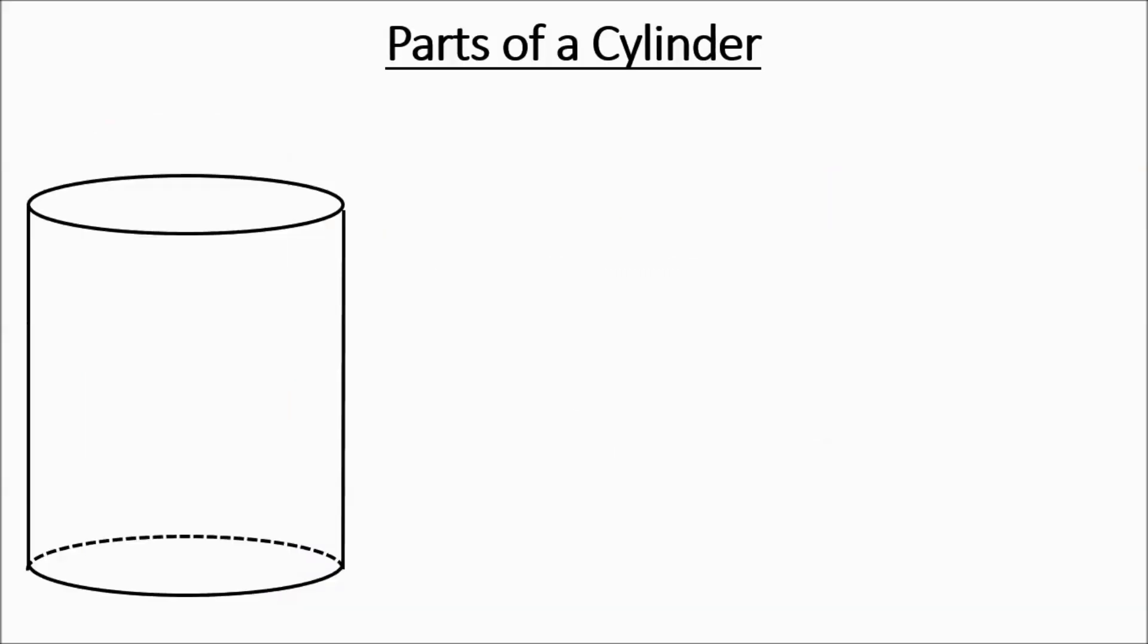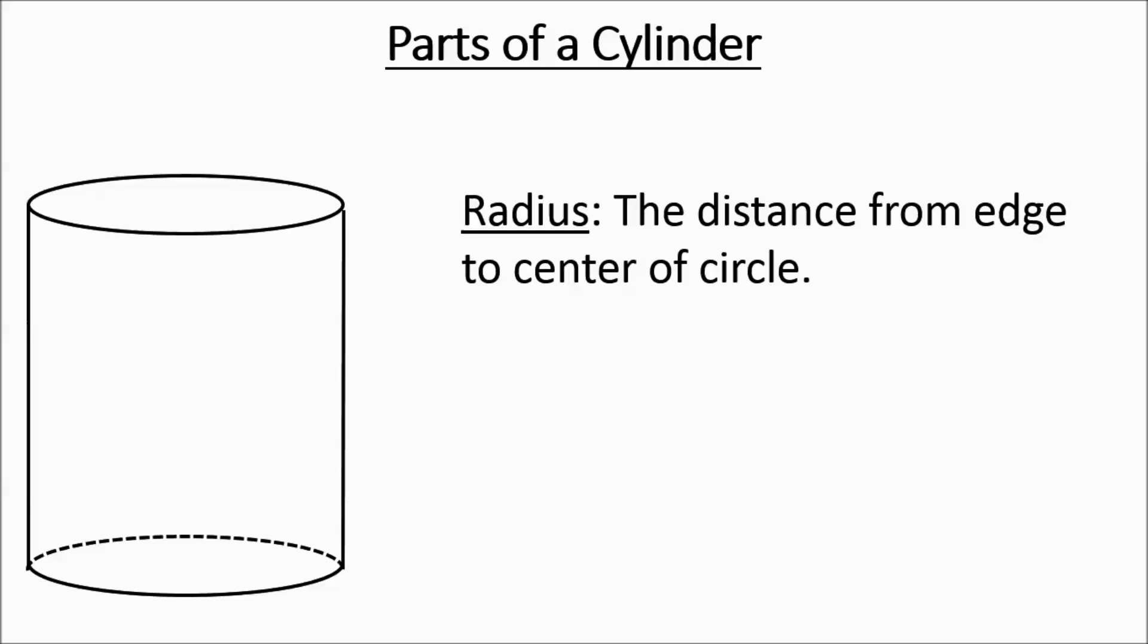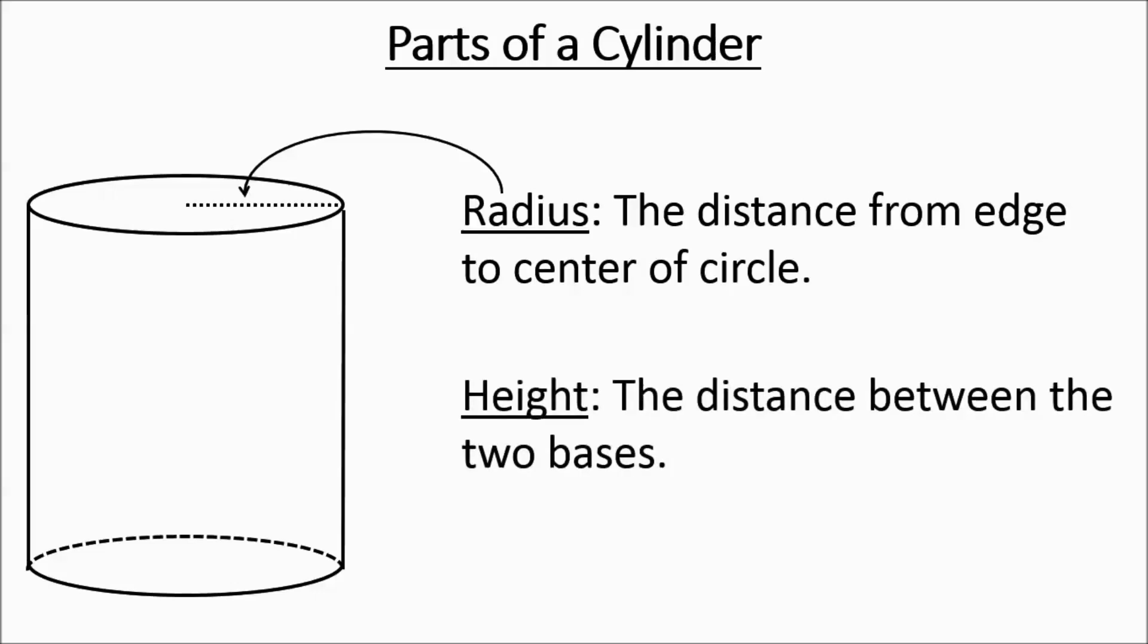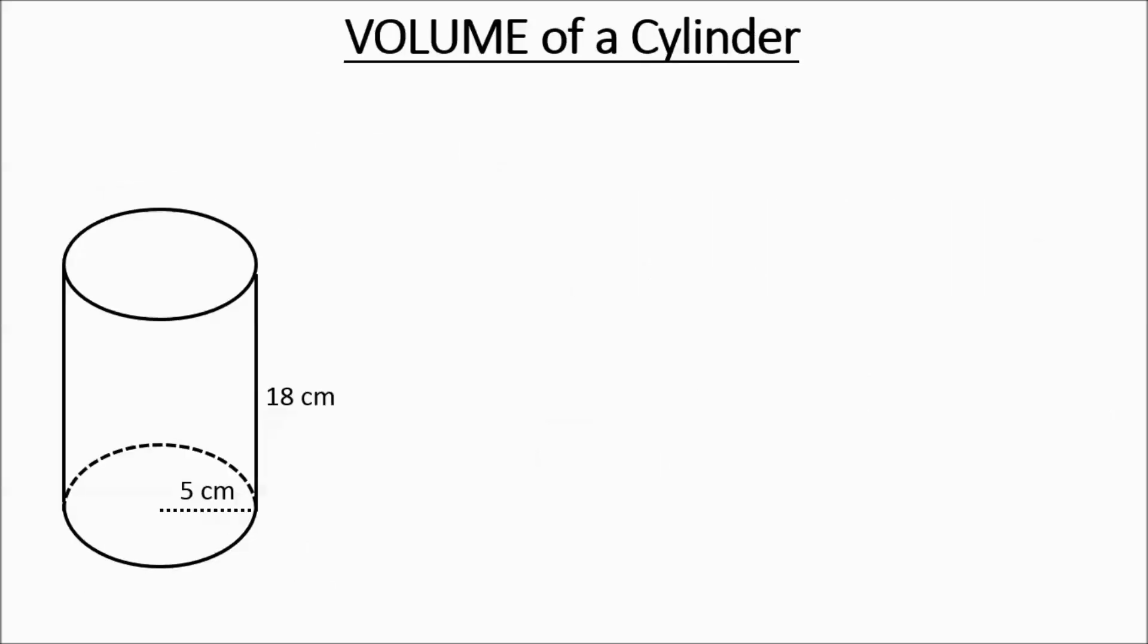Parts of a cylinder. You need to know the radius, which is the edge to the center of the circle. And that's the radius. And then you also need to know the height. The height is the distance between the two bases. So once you know those, you're able to figure out volume and surface area.